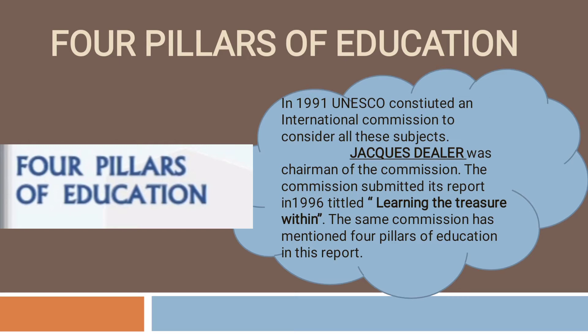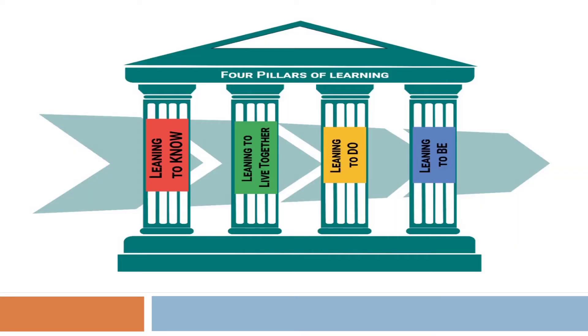Education given for a person's holistic development depends on which pillars of education we study. The four pillars are: the first is learning to know, the second is learning to live together, the third is learning to do, and the fourth is learning to be. Firstly, we will discuss learning to know.